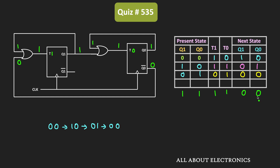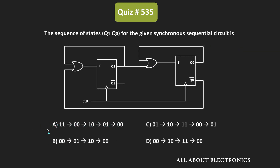Once the circuit goes into the 00 state, it will repeat the sequence 00→10→01→00. The circuit initially starts in the 11 state and then follows this sequence. Therefore, option A is the correct answer.